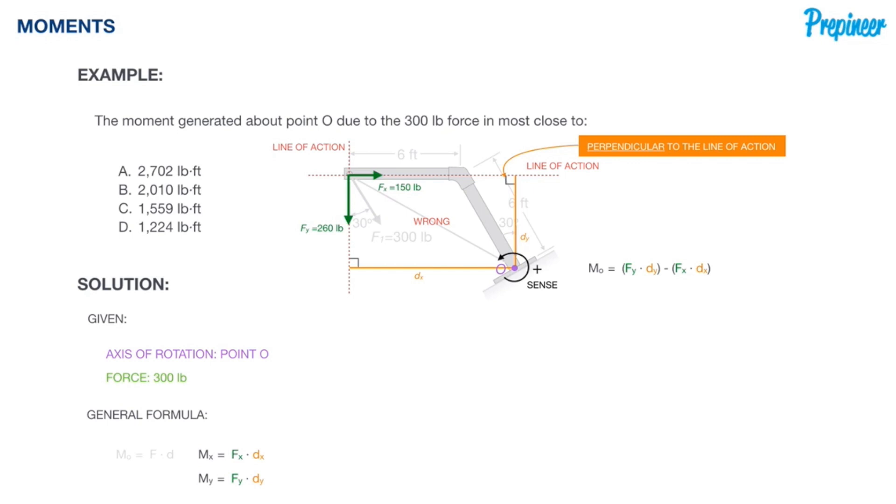Notice how we're subtracting the moment created by the Fx component. Again, that's because it's making a clockwise moment at 0.0, which is against what we have defined as a positive moment. Alright, so we're there. We're ready for some trigonometry.